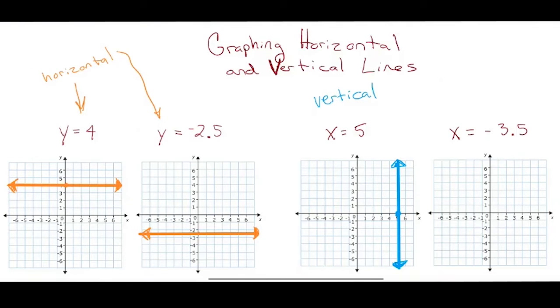Now, I'm going to graph x equals negative 3.5. That is also vertical. So I will find negative 3.5 on my x-axis, which is right here, halfway between the negative 4 and the negative 3, because negative 3.5 is negative 3.5.